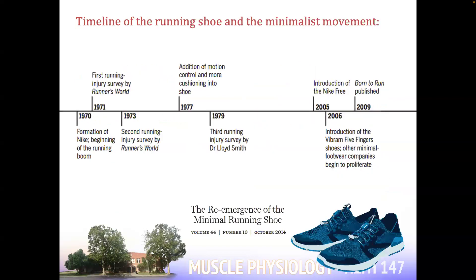Here's our timeline: around 1970, Nike was formed — technically 1964 as Blue Ribbon Sports, but Nike wasn't big until later. In the 1970s, the running boom started; people were running for pleasure and exercise. Shortly after, surveys on running injuries started to come out. Shoes gradually got more padded, more cushioned, more maximal. Then in the 21st century, the minimalist movement became marketable. After 2009, tons of people transitioned to minimalist shoes.